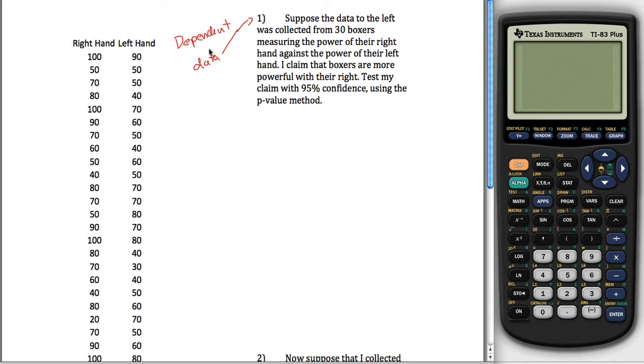The first thing is knowing how to recognize you have dependent data. The idea with dependent data is whenever you have two samples and an observation in the second sample is determined every time you get an observation in the first sample, you have dependent data. So what I mean by this is once I pick the boxer and put his right hand here, I automatically had to put his left here. And I picked another boxer, put his right here, his left had to go here.